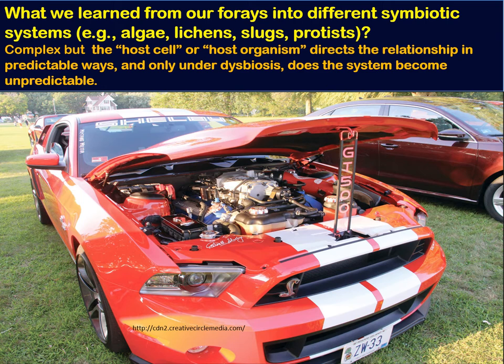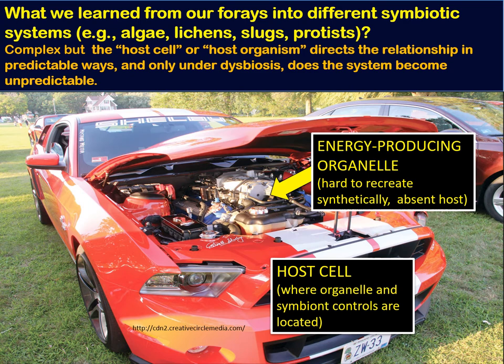What we've learned from our forays into different symbiotic systems — be they algae, lichens, sea slugs, protists, and so on — is that we can think of them as comprising two pieces. One is the entity in charge. In this case, showing the Mustang car, that's the chassis — that's the host cell or host organism. The Mustang chassis has the controls for running its motor and houses the motor. It has all of the parts that will allow the cell to function. But without the motor, which would be the symbiont in this case, it doesn't function very well at all. This understanding of how an energetic organelle is housed within a host cell and the kinds of controls and outcomes of this interaction has been one of the most important areas of research in my lab.